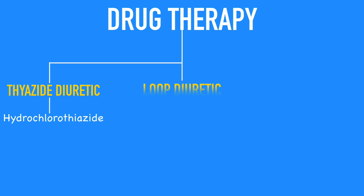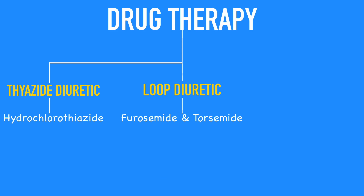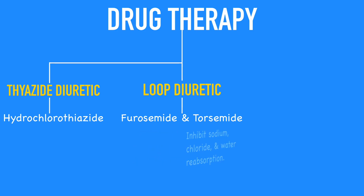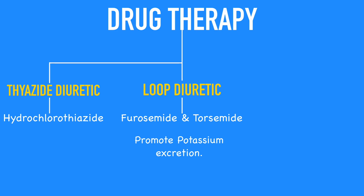The second type belongs to the family of loop diuretics, or high-ceiling, such as furosemide (Lasix) and torsemide (Demadex). They inhibit sodium, chloride, and water reabsorption in the ascending loop of Henle and promote potassium excretion. Loop diuretics are more effective in patients with impaired kidney function.